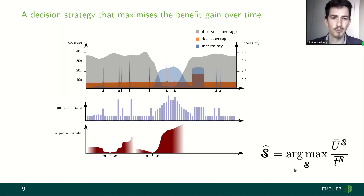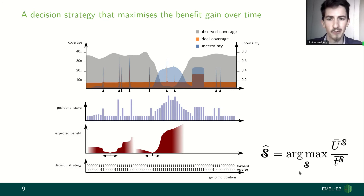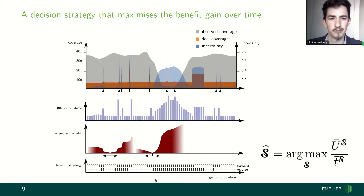Using these two components — the expected benefit of reads and the expected time cost of sequencing a fragment — we derive a strategy denoted S. Without going into too much detail about the equation, we end up with two vectors for the forward and reverse direction that gives us, for each individual site in the genome, the decision we want to make when a read maps to that position: whether we want to continue sequencing it or whether we want to reject it.